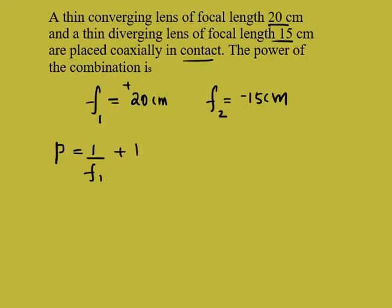1 by f1 plus 1 by f2. Over here you can see the f1 value is 1 by 20 and minus 1 by 15 will come.